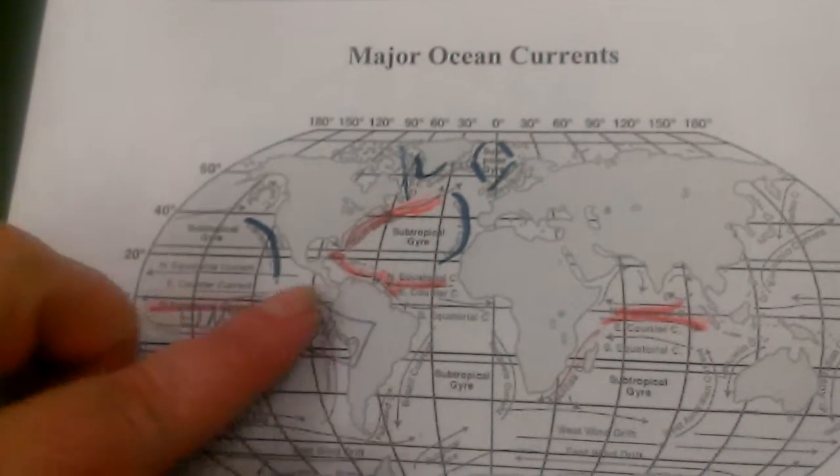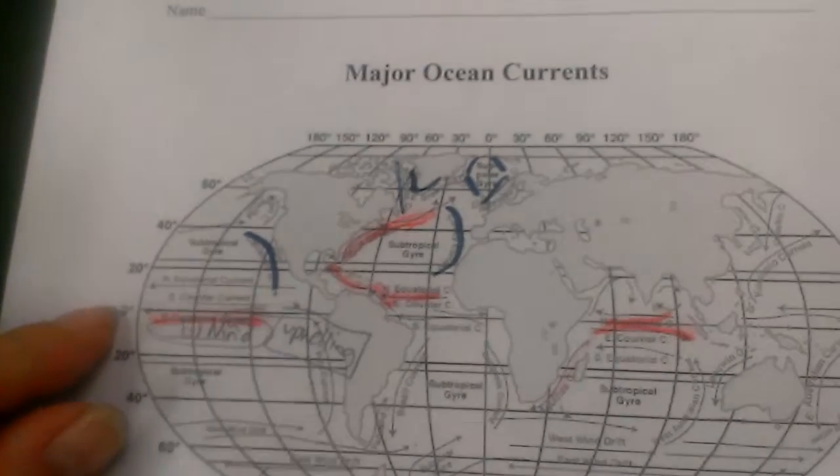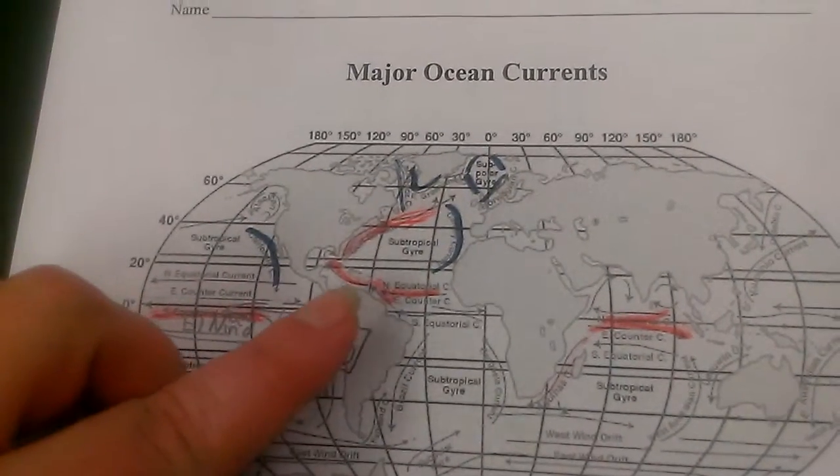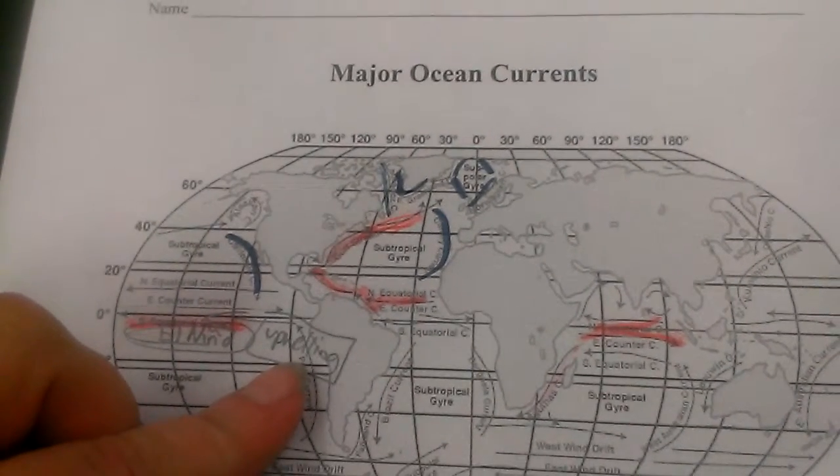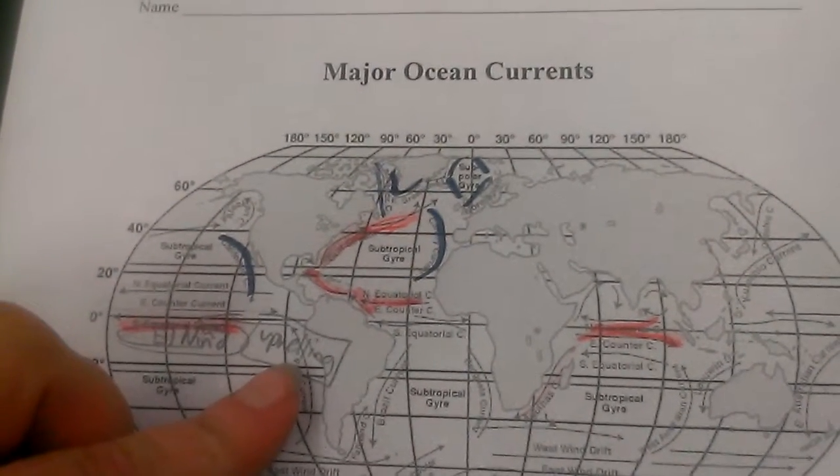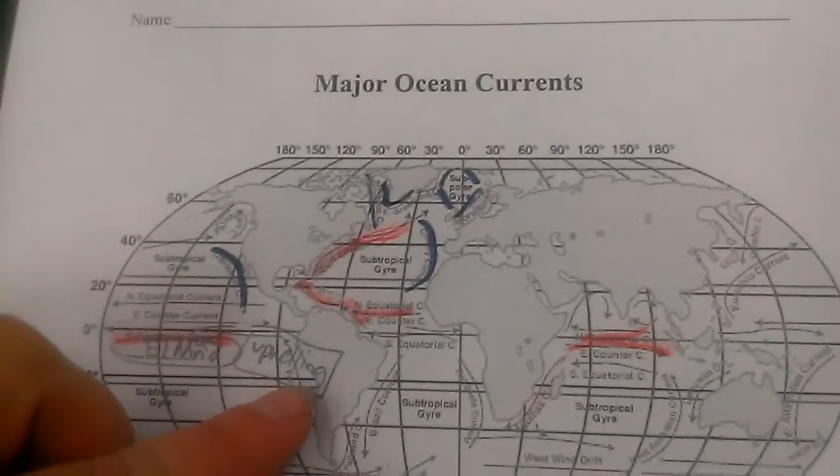As our wind blows our current across the equator, it allows water to upwell from the bottom, bringing nutrients to the top. So you have lots of migrating whales and dolphins and sharks that like these upwelling areas where there's lots of nutrients.